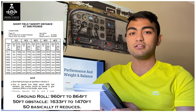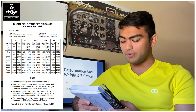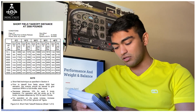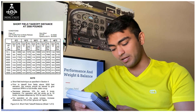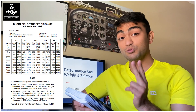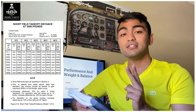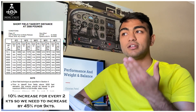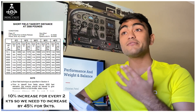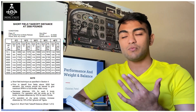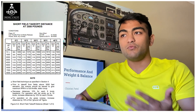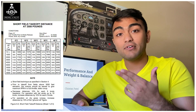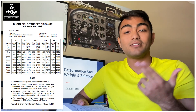A headwind reduces the distances. What happens with a tailwind? For operations with tailwinds up to 10 knots, increase distances by 10% for each 2 knots. For a 9-knot tailwind, that works out to about a 45% increase. We don't even need to calculate to see that a 10% decrease for a headwind versus a 45% increase for a tailwind is a massive difference.